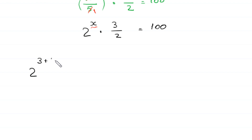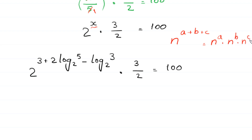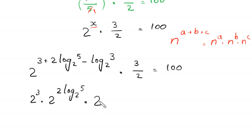Using the power rule that n to the power (a + b + c) equals n to the power a times n to the power b times n to the power c, this expression becomes 2 cubed times 2 to the power (2 times log base 2 of 5) times 2 to the power (negative log base 2 of 3), times 3 over 2, equals 100.